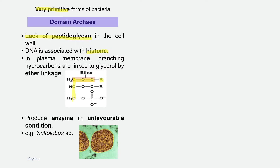If the environment becomes unfavorable to the bacteria — meaning not beneficial to their survival — the bacteria are able to produce enzymes which are more resistant to the changes. A typical example of domain Archaea is the Sulfolobus species.